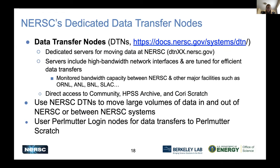We have a network of data transfer nodes — four of them open to SSH. You can go to dtn.01.nersc.gov to reach them. These are set up with high bandwidth network interfaces, tuned for efficient data transfers, and we monitor bandwidth between NERSC and other major facilities over ESNet like Oak Ridge and Argonne. These DTNs have direct access to the community file system, HPSS archive, and Cori Scratch. If you want to move large volumes of data in and out of NERSC or between NERSC systems, use the NERSC DTNs. For Perlmutter, use the Perlmutter login nodes or Globus.